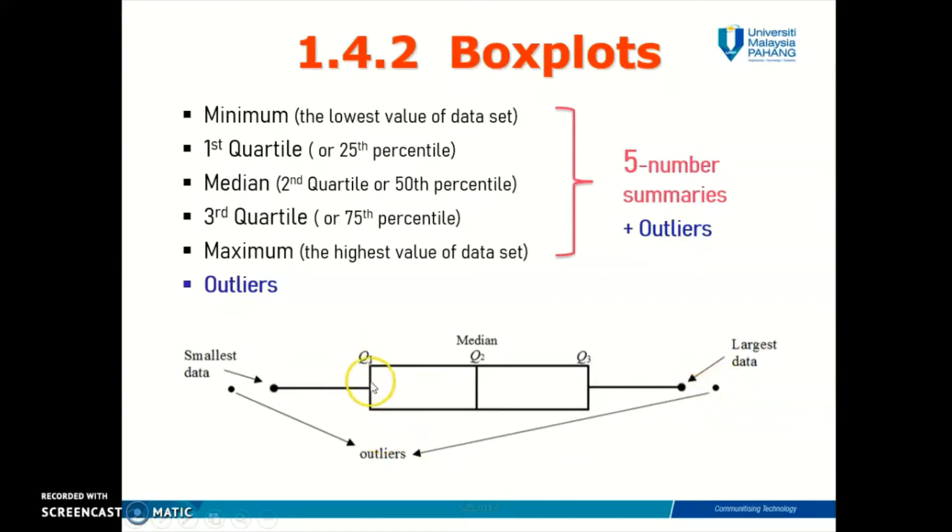The box typically starts from quartile one and ends at quartile three. From the left end of the box, you draw a line extending to the minimum value, and to the right end of the box, you draw a line extending to the maximum value. There you have the left and right whiskers of your box plot.